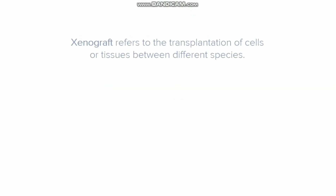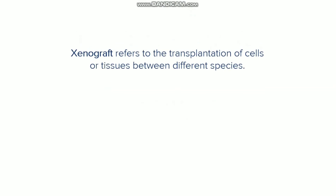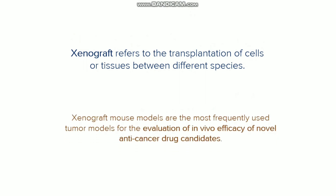Let's begin. First we need to know what xenograft is. Xenograft refers to the transplantation of cells or tissues between different species. Xenograft mouse models are the most frequently used tumor models for the evaluation of in vivo efficacy of novel anti-cancer drug candidates. In the lab we normally synthesize chemical drugs, anti-cancer formulations, or anti-cancer antibodies, and this xenograft model is the convenient method to evaluate the in vivo efficacy of those new drug candidates.